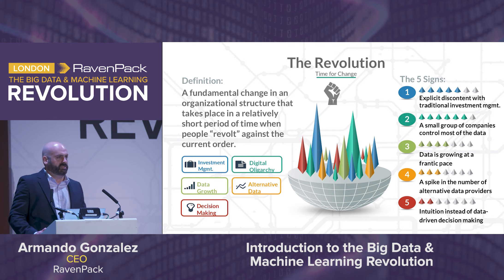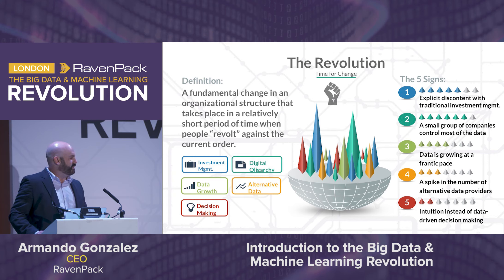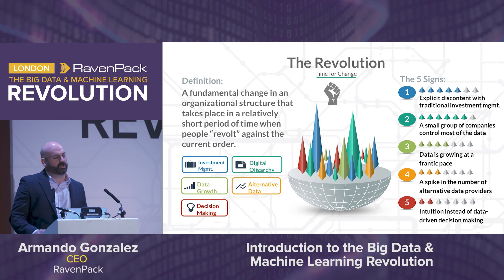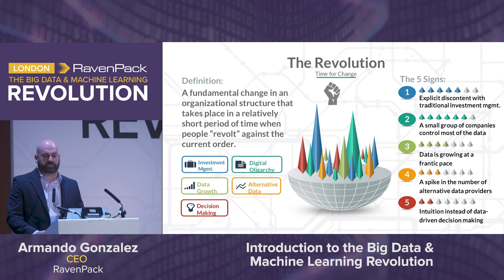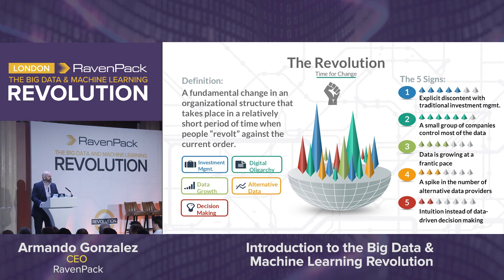The third sign is that data has been growing at a frantic pace, specifically unstructured content. As data grows, it becomes unmanageable and more difficult to use, making it hard to create a strategy that is predictable and understandable. As data is growing, we're also seeing a spike in the availability of new and alternative data sets, where before the large amounts of information came from structured market data and fundamental data. Now, alternative data is significantly larger than those two sources and extremely difficult to process. A lot of these data vendors don't really understand how to map it to the actual securities we trade.